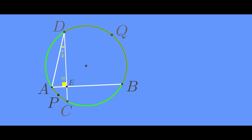This is x by 2, so this is x by 2. What is BAD? BAD and BQD — if you have BAD, you will have BQD. This is BAD.